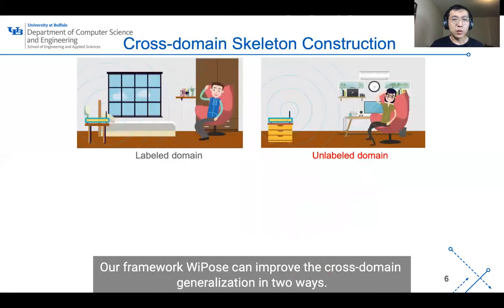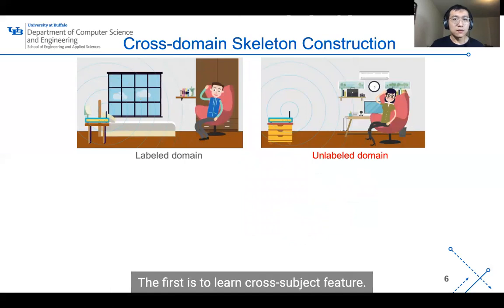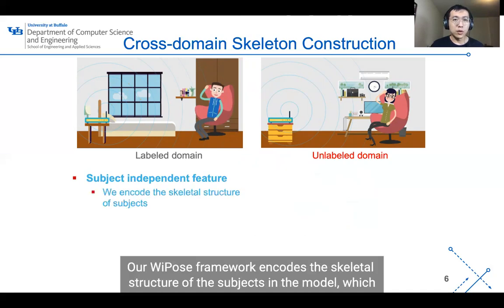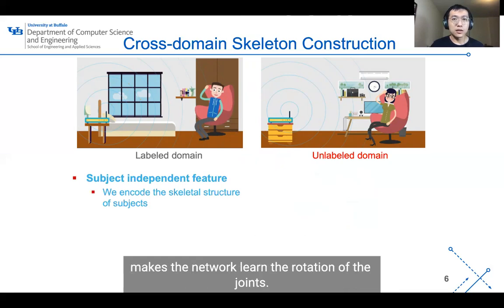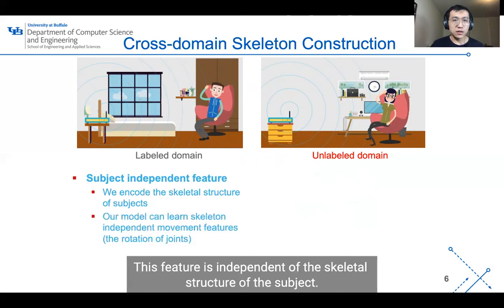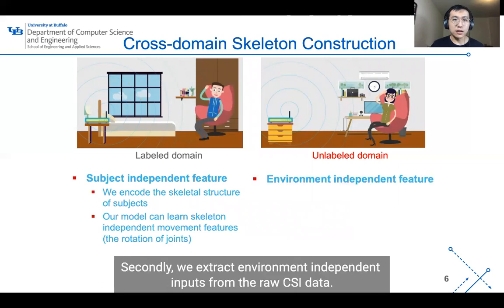Our framework Wi-Pose can improve cross-domain generalization in two ways. The first is to learn coarse subject features. Our Wi-Pose framework encodes the skeletal structure of the subjects in the model, which makes the network learn the rotation of the joints. This feature is independent of the skeletal structure of the subject.